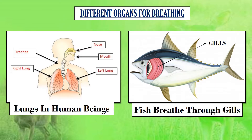Let us study the different organs present in animals for breathing. We all know that all animals breathe in oxygen and give out carbon dioxide. Breathing is essential for survival. Different animals living in different habitats have different organs for breathing that suit their environment.